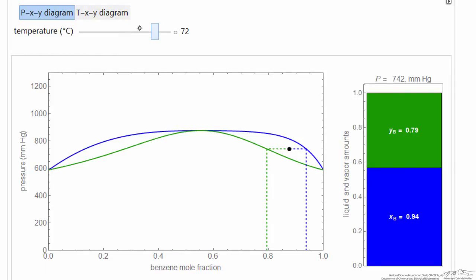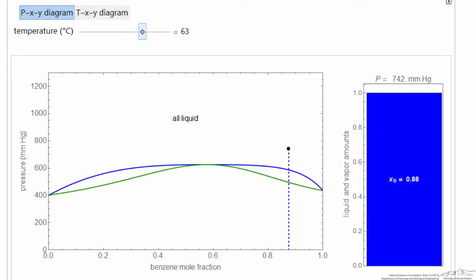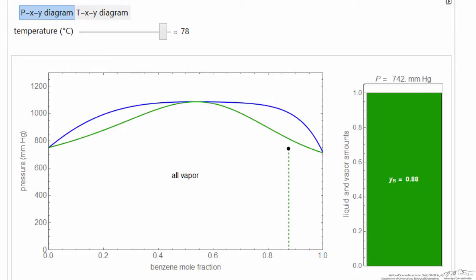On the pressure XY diagram, we can also change the temperature that we're displaying. And then you can see how the azeotrope behavior changes.